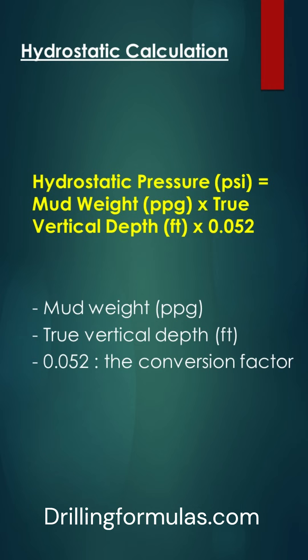Calculation of hydrostatic pressure involves the following formula: Hydrostatic pressure in pounds per square inch equals mud weight in pounds per gallon times true vertical depth in feet times 0.052, where mud weight represents the density of the drilling fluid measured in pounds per gallon.